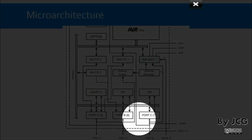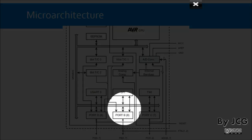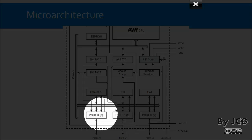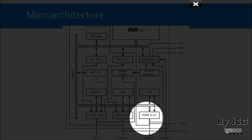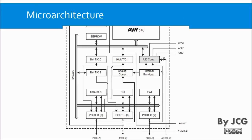Finally we have three ports — the external pins of the microcontroller: port B, port C, and port D. Port D has 8 pins, port B also has 8 pins, but port C has only 7 pins. This is it for this video. Thanks for watching.